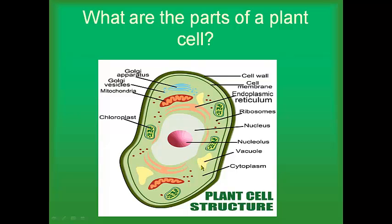Then we have vacuoles. I don't really like this picture because in a plant cell, vacuoles are huge. Usually in a plant cell, the nucleus is small and the vacuoles are actually even larger than the nucleus. Vacuoles hold water for a plant cell — they contain water and hold it for the cell. They can hold other things too; they're like a big storage tank, but usually they hold water.